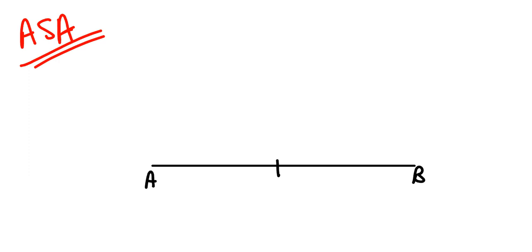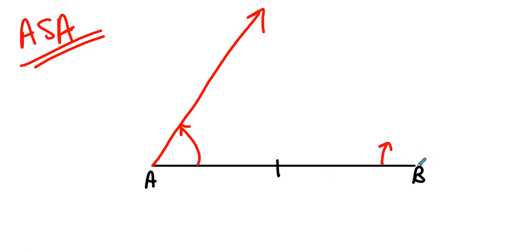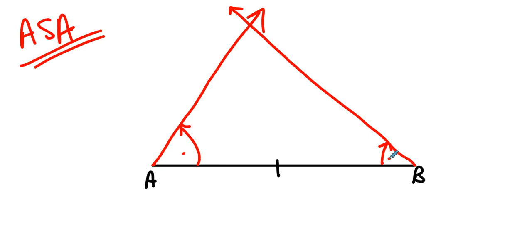And the answer is yes, it must be. We build some angle here and construct, and then we build some angle here and construct. Because this angle is a fixed number, this ray is fixed. Because this angle is a fixed number, this ray is fixed. These two rays are not parallel because this angle and that angle add up to less than 180 degrees. So this ray and this ray have to intersect somewhere — they intersect up here — that point is vertex C, and triangle ABC is well-defined.